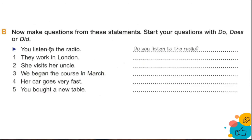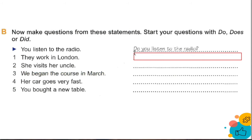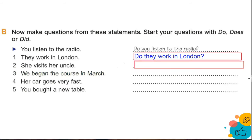Now make questions from these statements. Start your question with do, does, or did. For example: 'You listen to the radio' → 'Do you listen to the radio?' Number one: 'They work in London.' Do they work in London? Number two: 'She visits her uncle.' Es presente, por lo tanto no usamos did. Does she visit her uncle? Y ya omitimos la regla de la S cada vez que se pregunta.